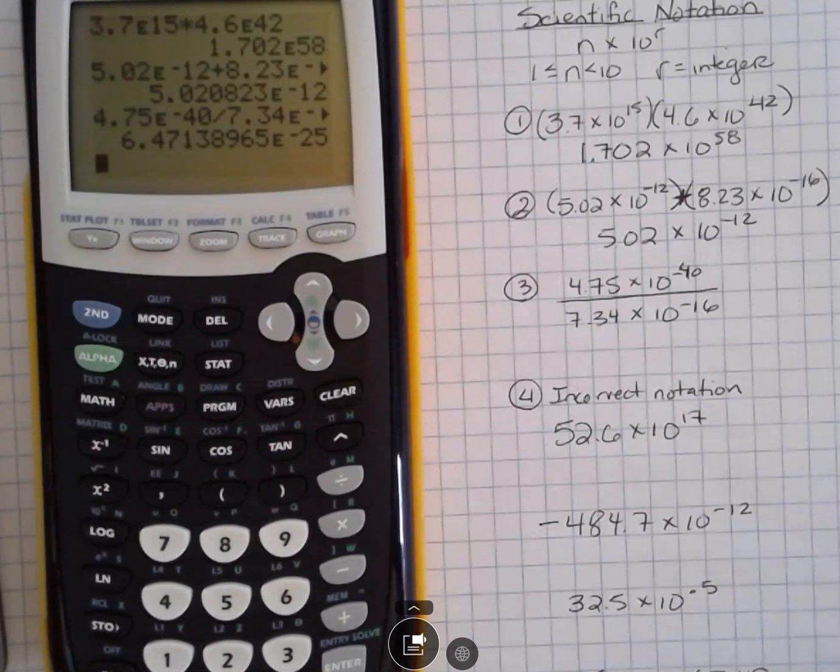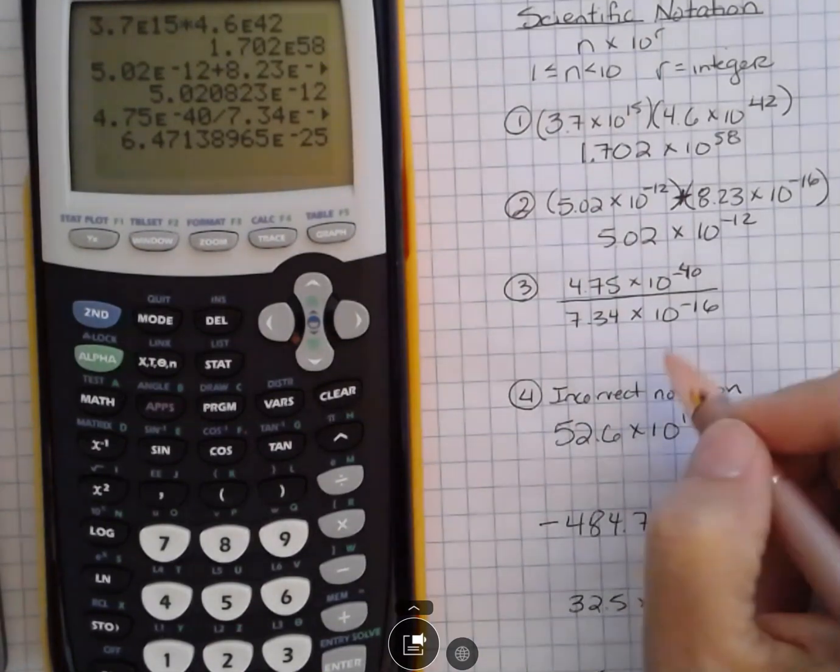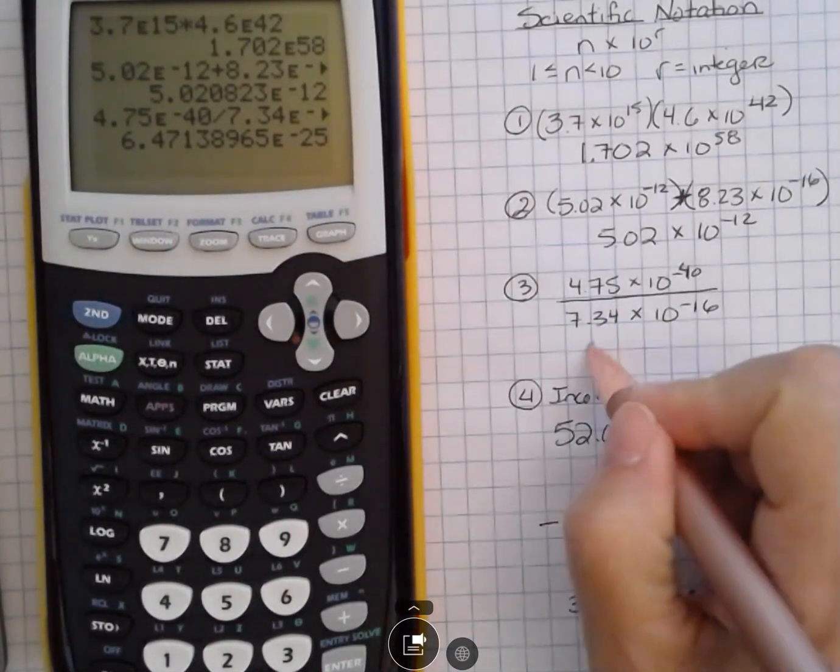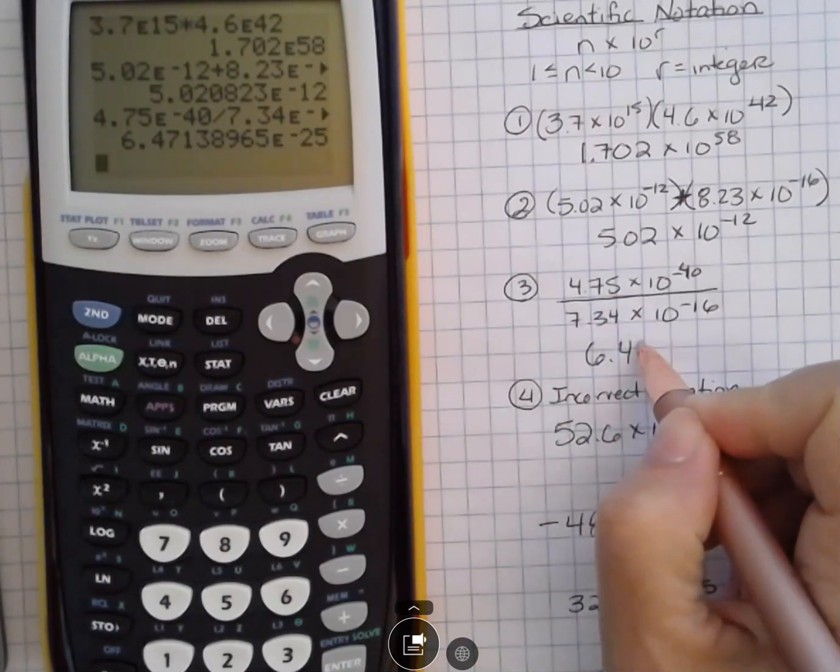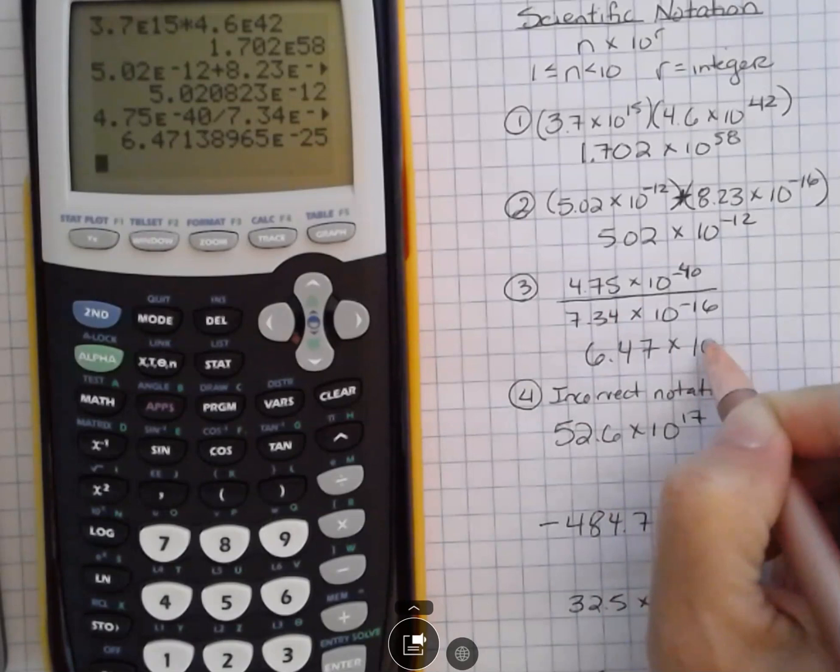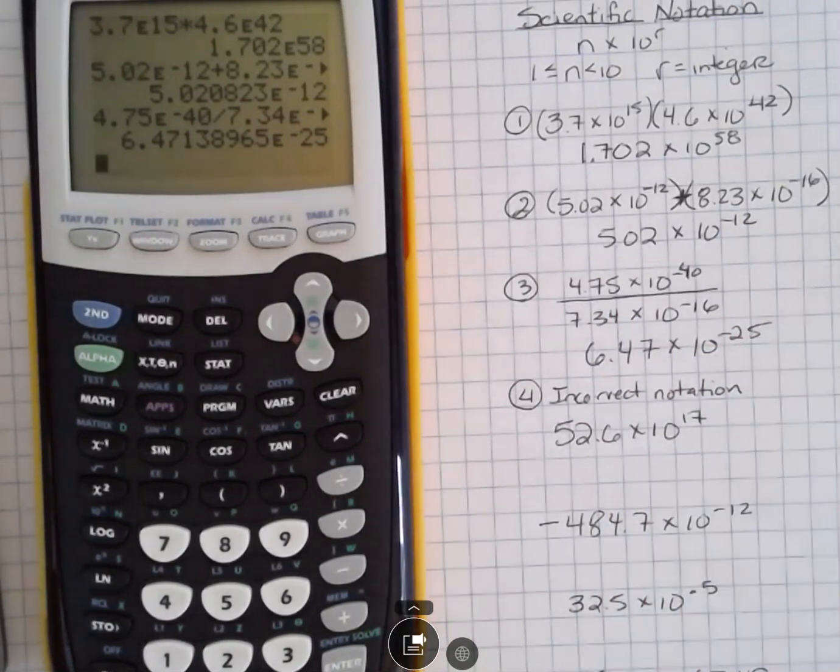And that's going to give you this answer. So I'm going to round that to two places as well, since we have two digits in our problem, 6.74 times 10 to the negative 25th.